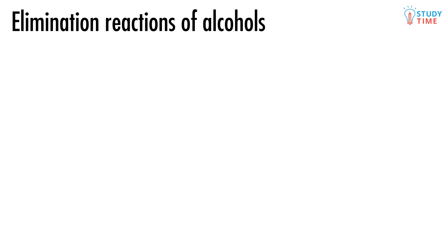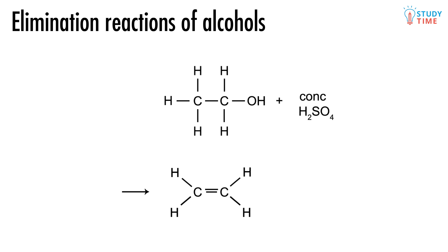We get elimination reactions to work by using concentrated sulfuric acid. In a simple elimination reaction of ethanol, the molecule loses an OH from one carbon and an H from the adjacent carbon, and a double bond is formed between them, giving us a molecule of ethene. We sometimes call these dehydration reactions because the original molecule loses two H's and an O, which is simply water.